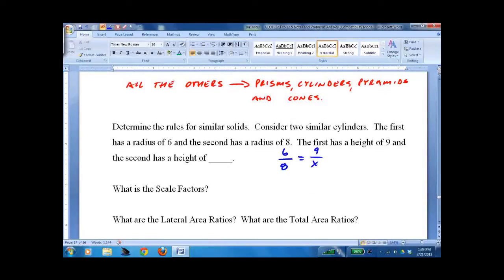And we can cross multiply, although I like to do this. This is times 3 halves, so multiply this by 3 halves. We get x equals 12. So that's scale factor 6 over 8, also known as 9 over 12, equals 3 over 4.